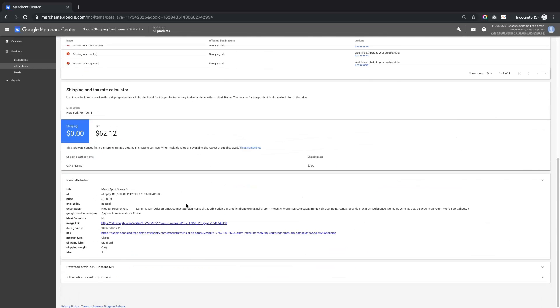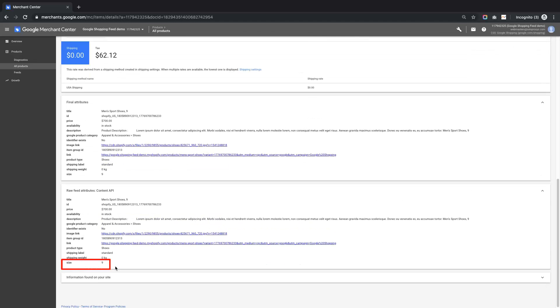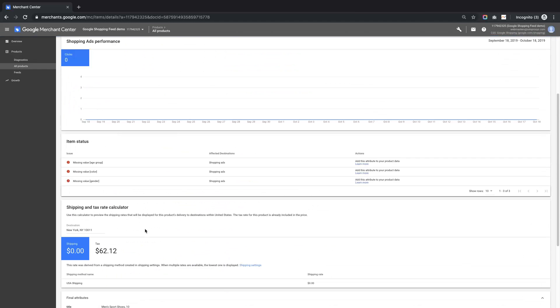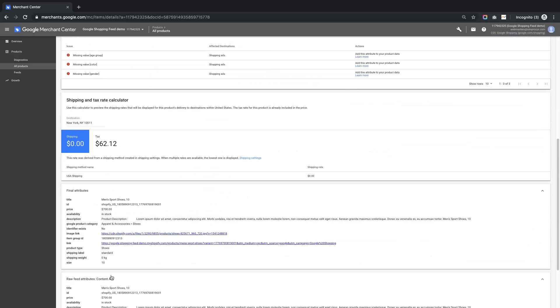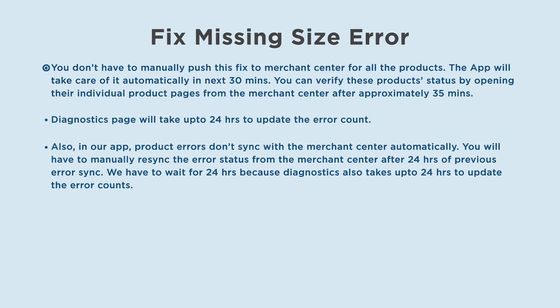You don't have to manually push this fix to Merchant Center for all the products — the app will take care of it automatically in the next 30 minutes. You can verify these products' error status by opening their individual product pages from the Merchant Center after approximately 35 minutes, but the diagnostics page will take up to 24 hours to update the error count.